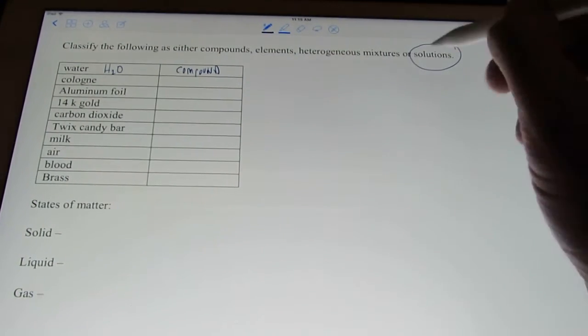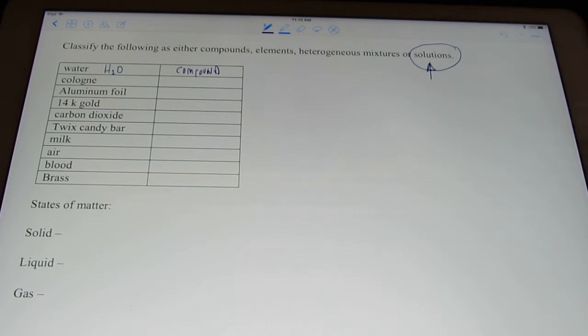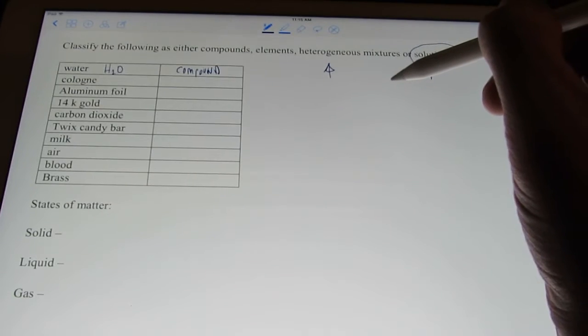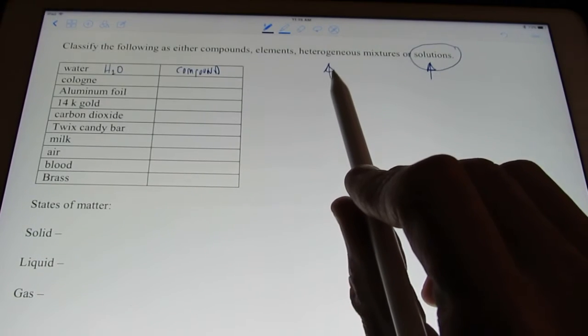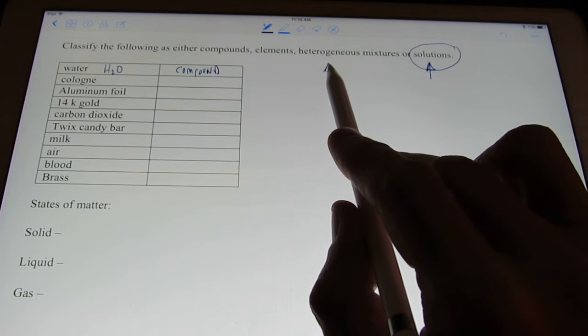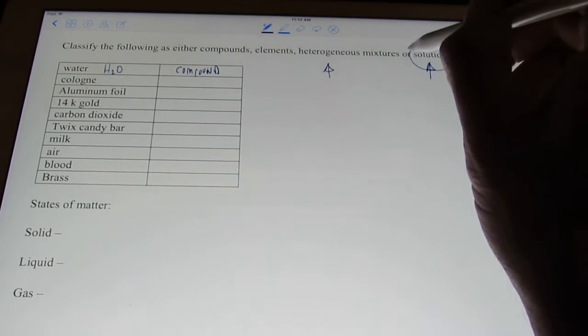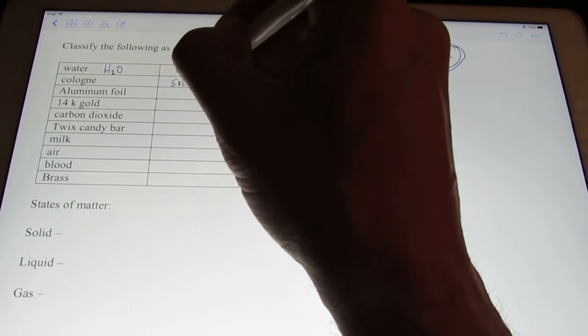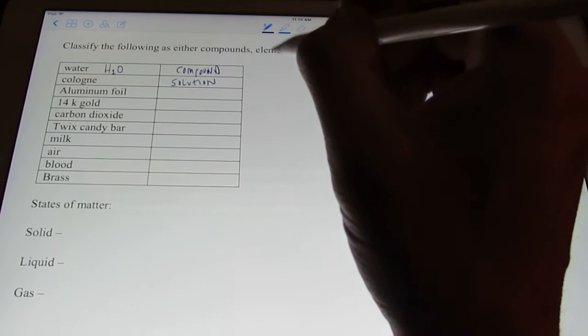So, is it uniform throughout? If it was, we would call it a solution. Or, is it not uniform throughout? Can we separate it very easily? Well, not really. We can't separate it by filtration. It doesn't settle out upon standing. So, I would call cologne a solution. Remember, another term for solution is a homogeneous mixture.